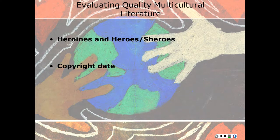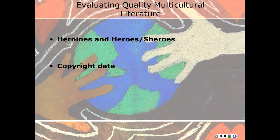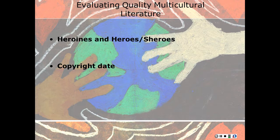Heroines and heroes are accurately defined according to the concepts and struggles for justice appropriate to their cultural group. They are not those who avoid conflict with and thus benefit the white majority. Copyright date: during the mid and late 1960s, most books on minority themes were written by white authors and reflected a white middle-class mainstream point of view. More recently, beginning in the 1970s, books began to reflect a pluralistic society. The copyright date of a book may be one clue as to the possible biases to be found within it.